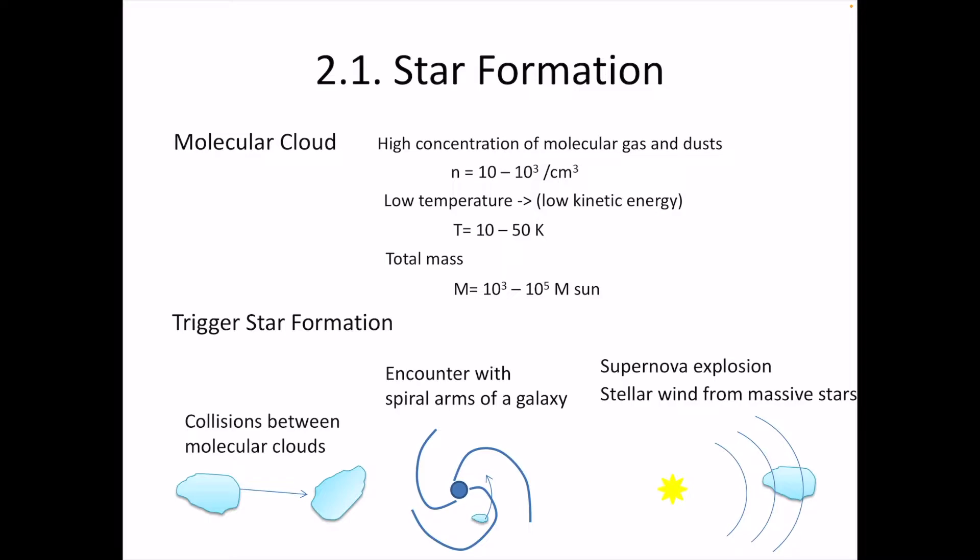A molecular cloud has a high concentration of molecular gas and dust. The number density of gas in a molecular cloud is about 10 to 1,000 particles per cubic centimeter. Compared with the average number density of one particle per cubic centimeter in the universe, this is much higher than average. The temperature of the molecular cloud is quite low, like 10 to 50 Kelvin.